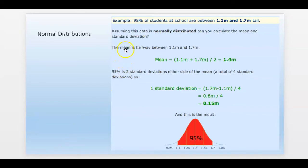The 95% is two standard deviations on either side of the mean. So you can take the difference and divide it by four, which is what they're doing right here. 1.7 minus 1.1 divided into four parts. Those are the four standard deviations they're talking about right there that make up 95% of the data values. So the standard deviation is 0.15.